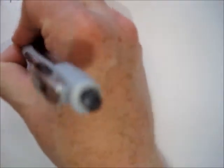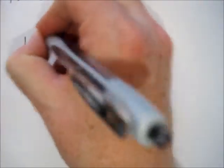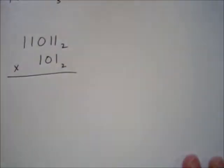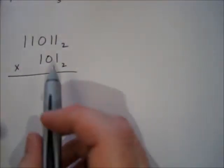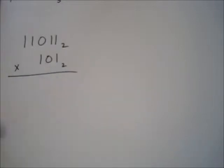Next problem — problem eight on your sheet: one-one-zero-one-one base two times one-zero-one base two. Multiplication in binary is one of the easiest things we can do because you're multiplying by either one or zero.